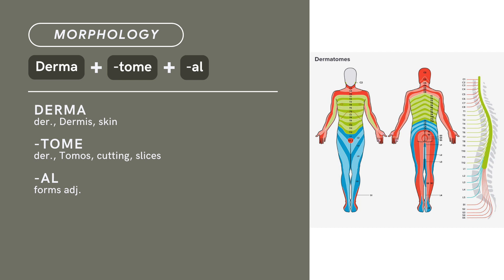Tome is derived from tomus, meaning cutting or slicing. -Al is a suffix that forms an adjective. There you have it — compound term: dermatome and dermatomal.